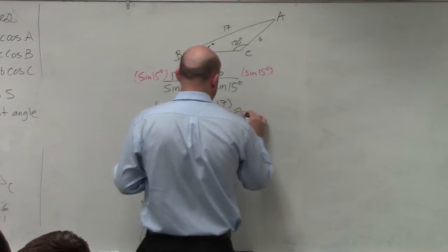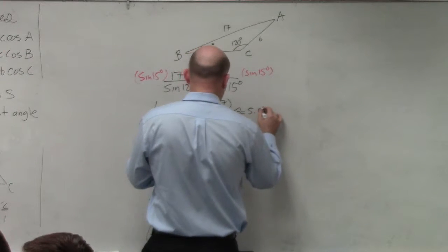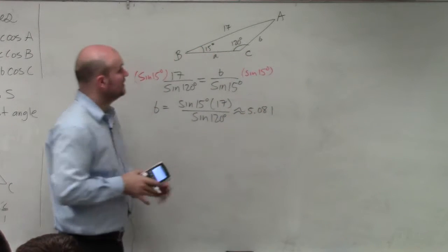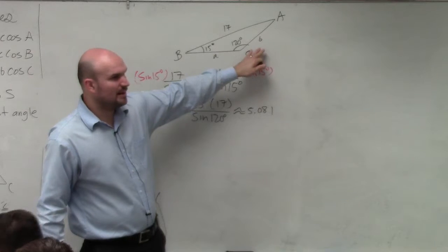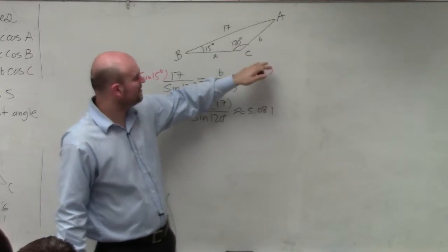Also, make sure that you're in the correct mode. You're in degree mode. And I get 5.081 rounded. So I'll use my approximate 5.081. And does that kind of seem kind of about right? Yeah, pretty roughly, right?